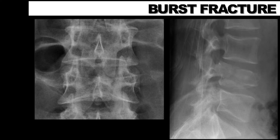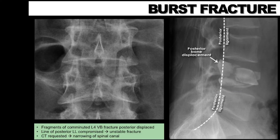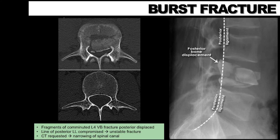With reference to the x-ray, we can see bone fragments of the comminuted L4 vertebral body fracture posteriorly displaced into the spinal canal. Tracing the line of the posterior ligament, we can see it has been compromised or interrupted. The fracture is therefore considered unstable as it crosses two columns. All patients are required to undergo a CT scan to assess the injury, evaluate the extent of retropulsion fragments, and report the percentage of spinal canal narrowing.